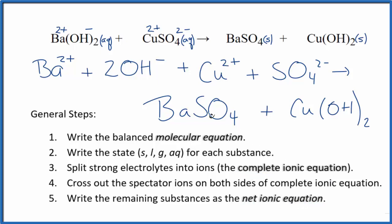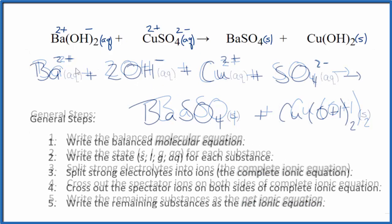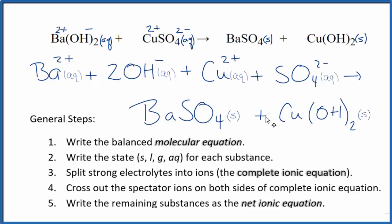Let me clean it up and write the states in, and we'll have our net ionic equation. So this is the balanced net ionic equation for barium hydroxide plus copper sulfate.